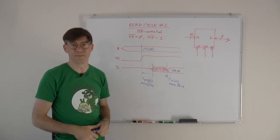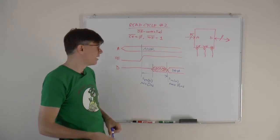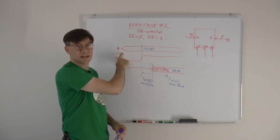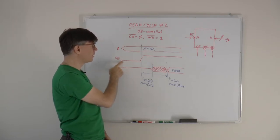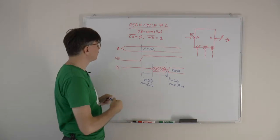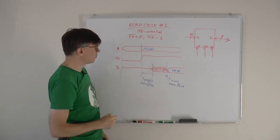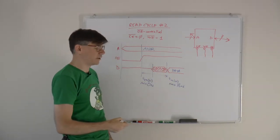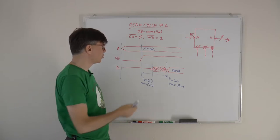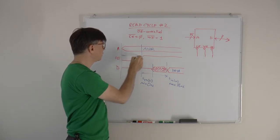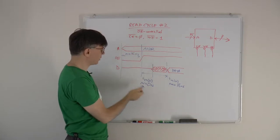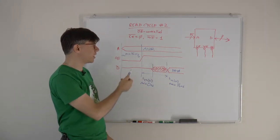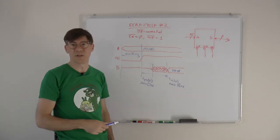You might ask: this is a 70 nanosecond memory — how is it going as fast as 35 nanoseconds? The key is that the address has been set up long before you assert output enable. From address valid to data valid is still 70 nanoseconds total. So output enable only needs 35 nanoseconds because the address was already valid for at least 35 nanoseconds before that. That's another way of reading when you don't want the output buffers enabled all the time.